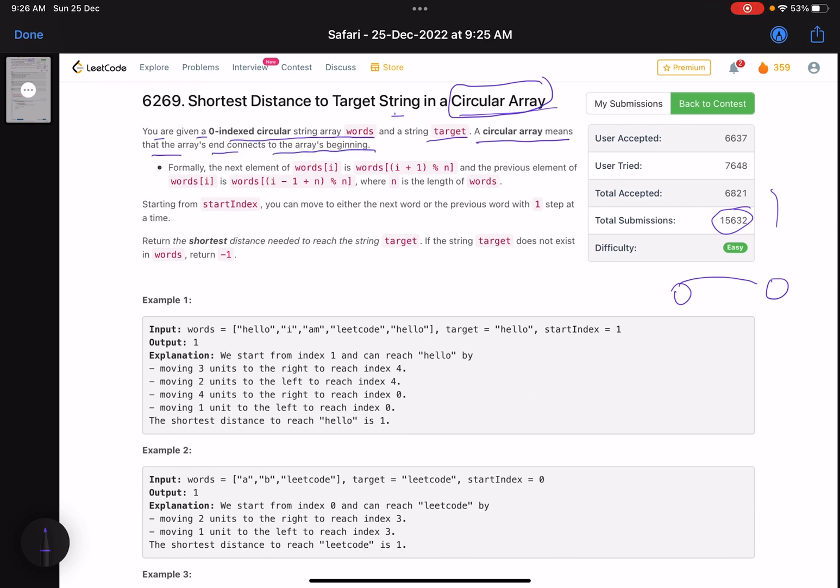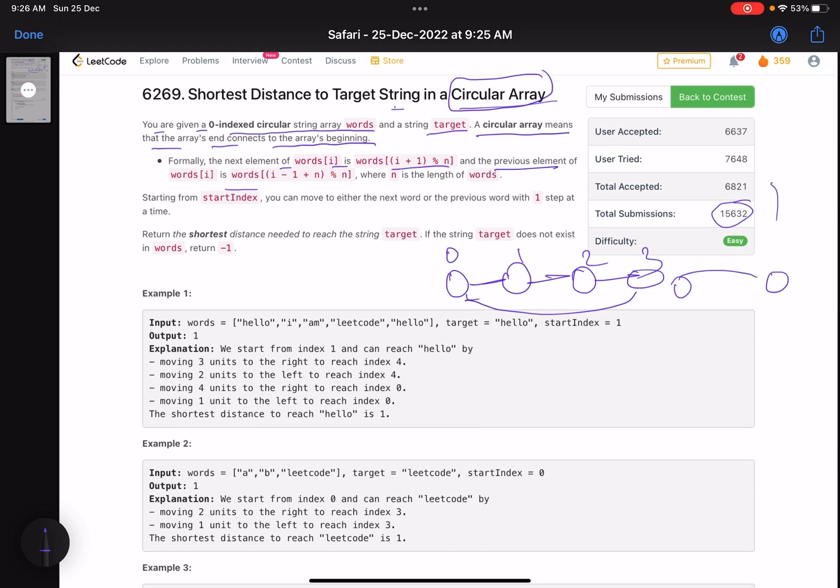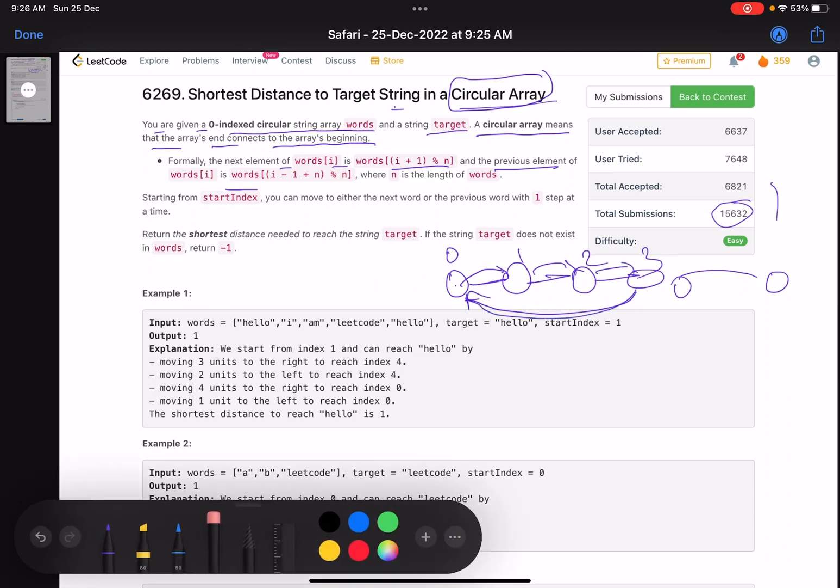You are given a zero-indexed circular string array words and a string target. A circular array means that the array's end connects to the array's beginning. Formally, the next element of words[i] is defined by the formula, and the previous element is also defined. So if this is your array at index 0, 1, 2, and 3, all elements are connected in both directions.